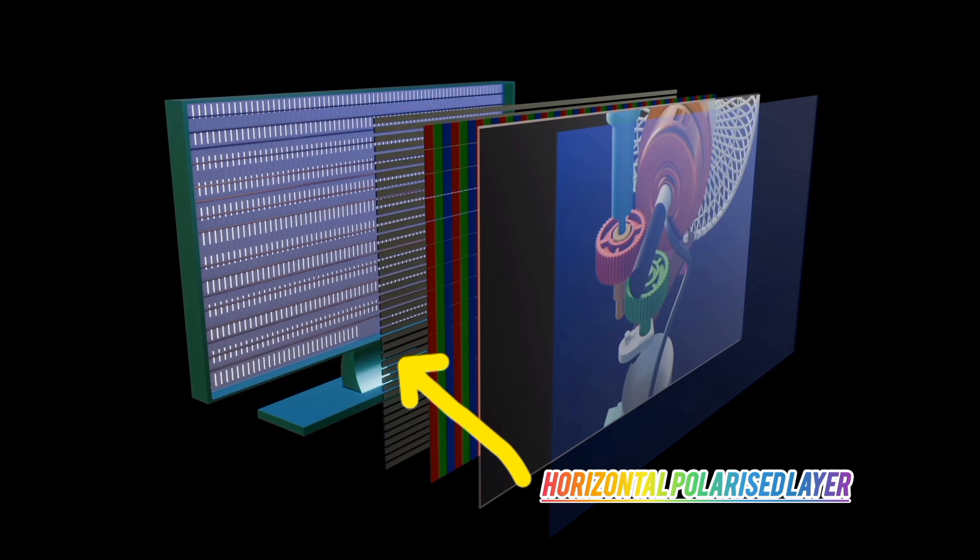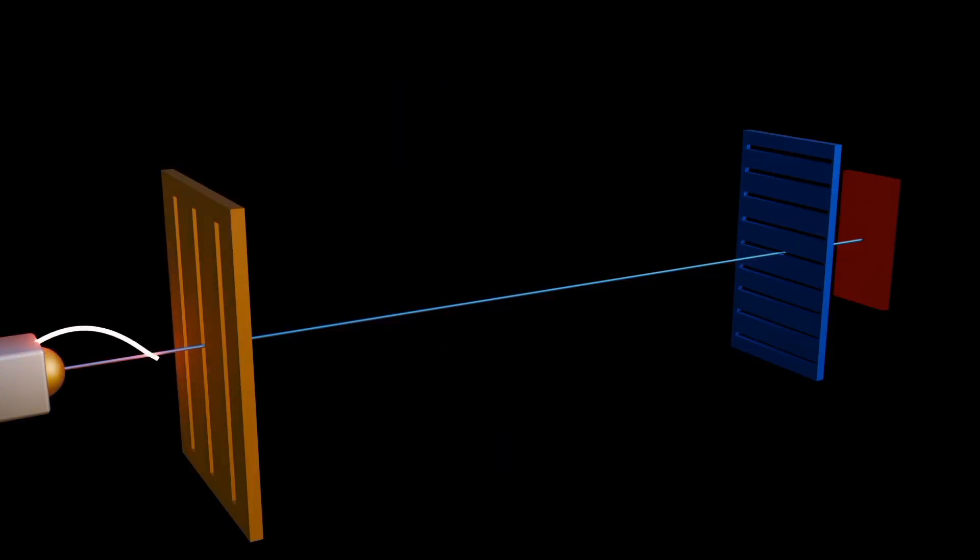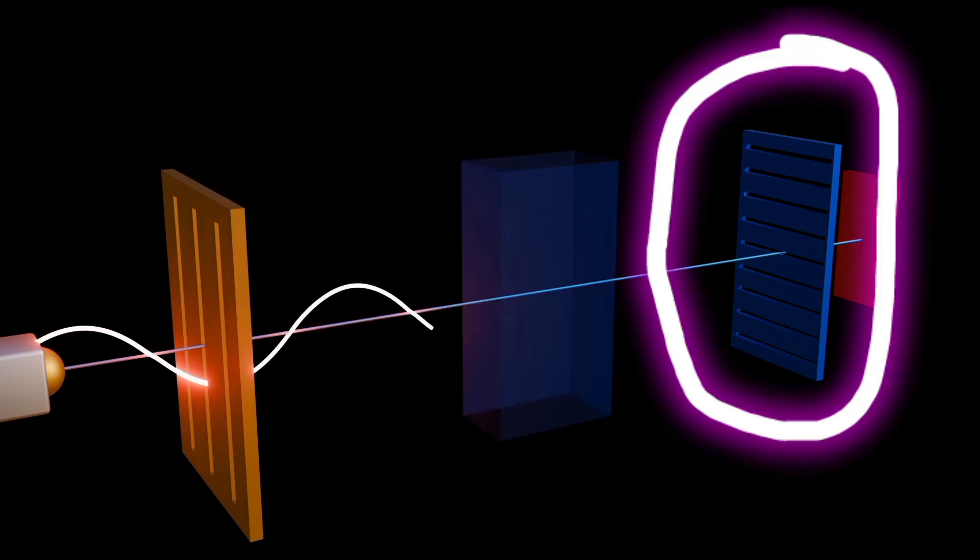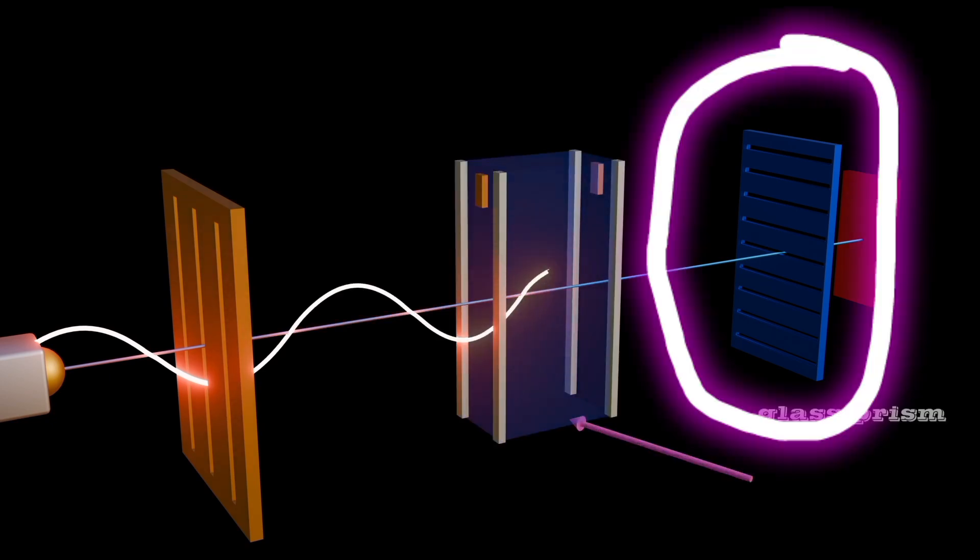Then the horizontal polarized layer. This allows only light waves oscillating in one direction horizontally to pass through. The incoming light from the backlight is filtered to create horizontally polarized light.